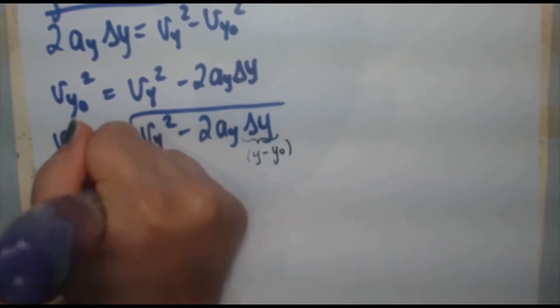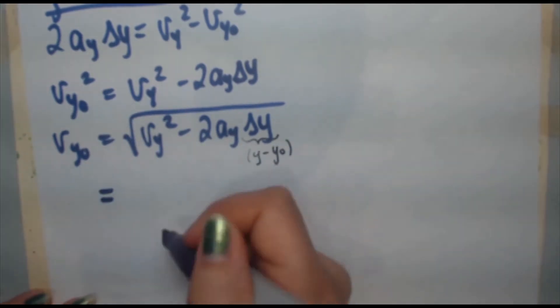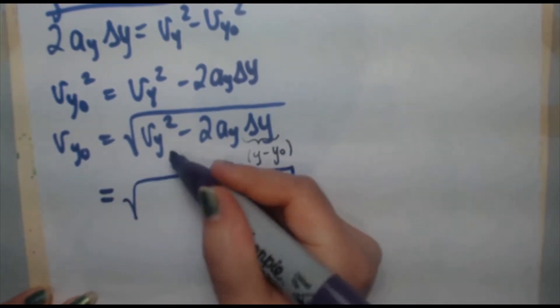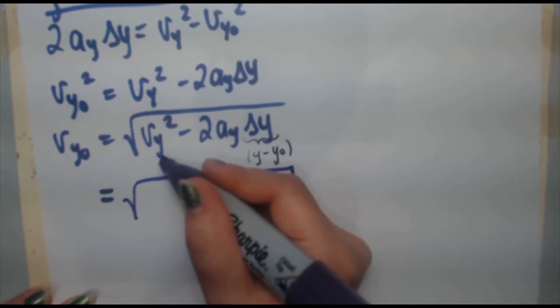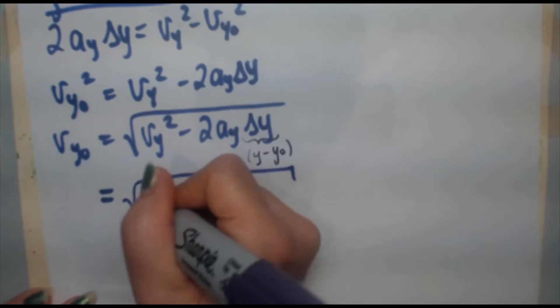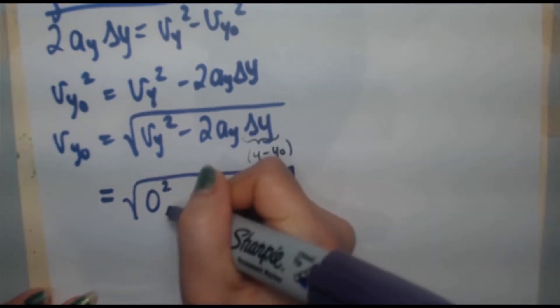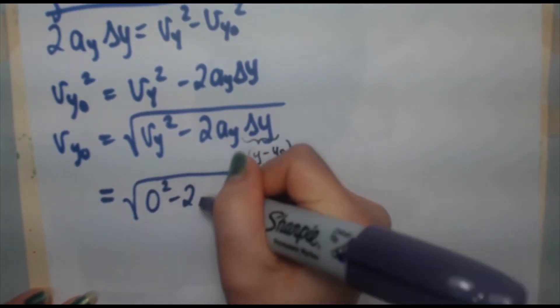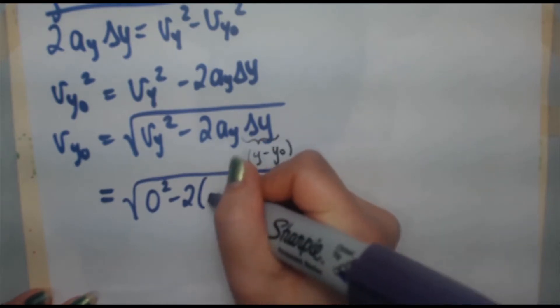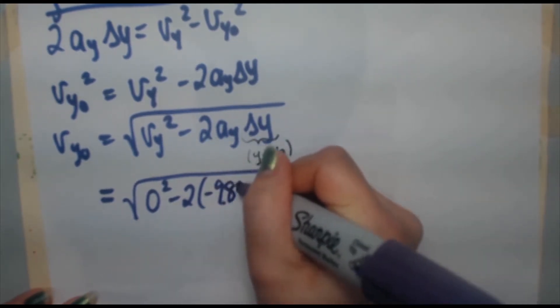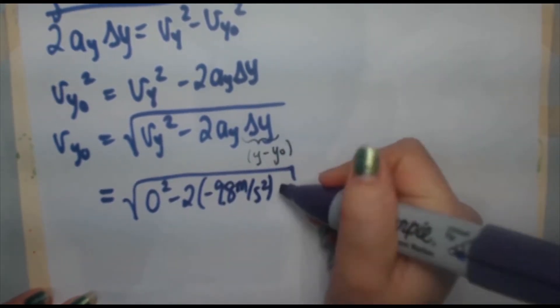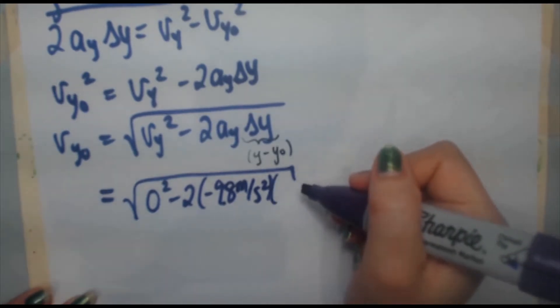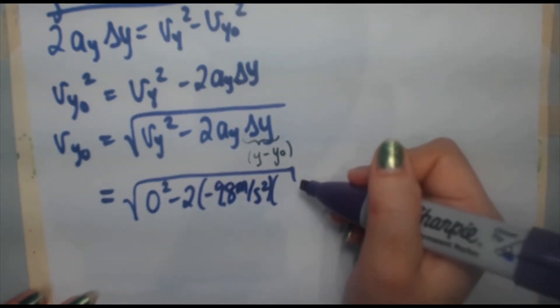Let's start plugging our numbers in. Like I mentioned earlier, vy, the final component of the velocity should have no y direction because it only is supposed to have a horizontal component of velocity. So 0² minus 2 times acceleration in the y, that's going to be negative 9.8 meters per second squared times Δy. y minus y₀. y₀ is 0.